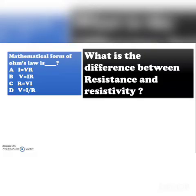The mathematical form of Ohm's law — options: I = VR, V = IR, R = VI, or V = I/R — the correct option is V = IR.